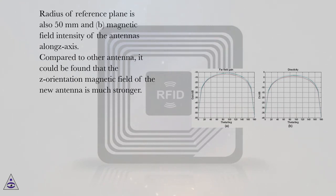Radius of reference plane is also 50 mm. And B: magnetic field intensity of the antenna along z-axis.